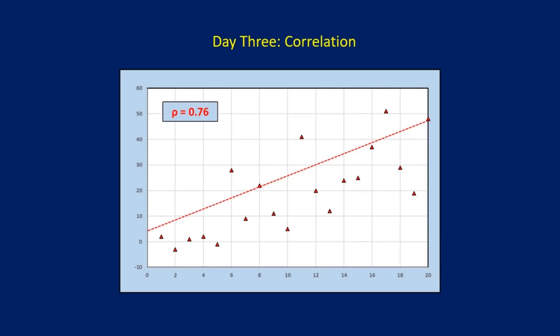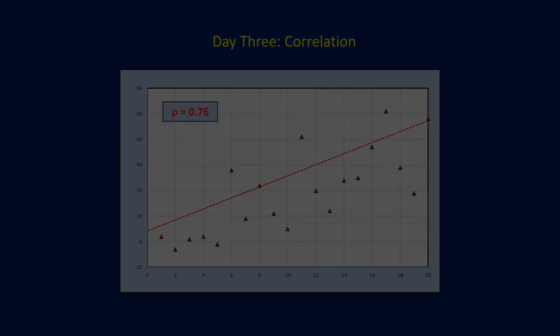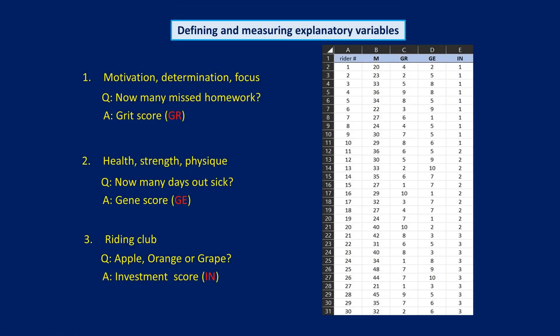Welcome back, class. Last week, we filled out our database by adding values for our three explanatory variables: grit, genes, and privilege, using scores for each rider based on their answers to my questionnaire, as well as the riding club they trained with.